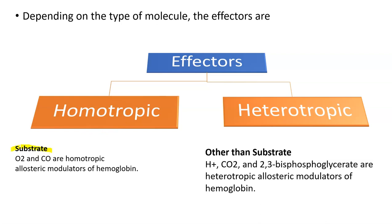These effectors can also be categorized depending on which molecules are binding. If the substrate itself is activating the enzyme, then this effector is called a homotropic effector. For example, in hemoglobin, oxygen and carbon dioxide are the substrates which bind to hemoglobin, and their binding increases the activity of hemoglobin — so the substrate itself is activating the protein.